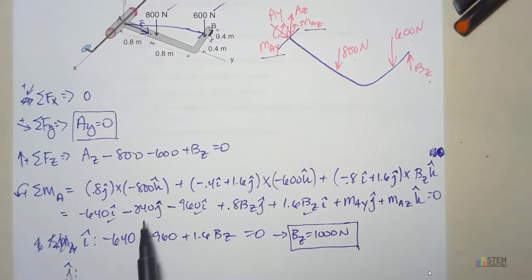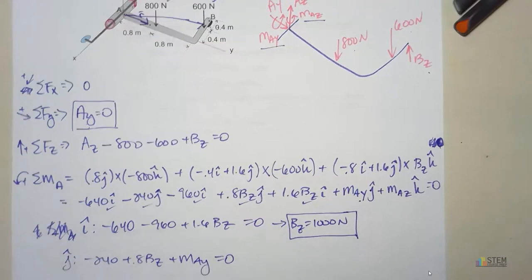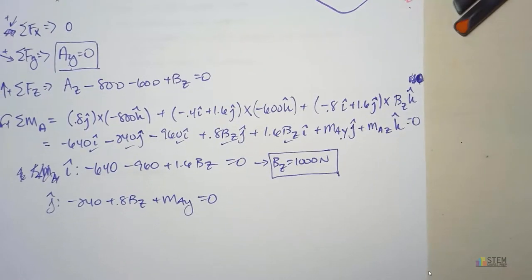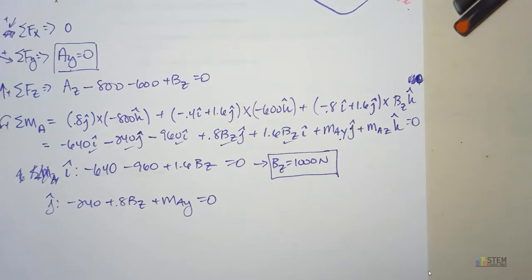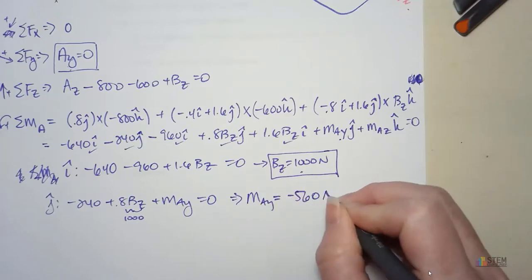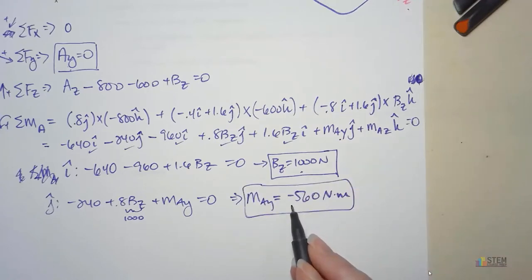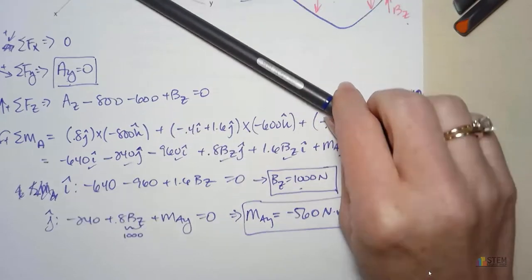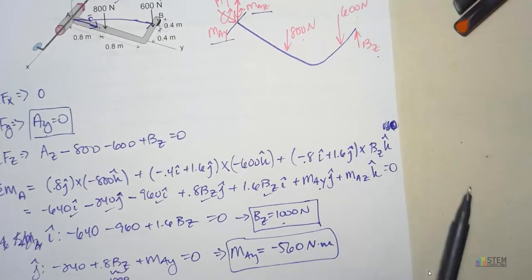Now J, let's look at the J terms. We've got negative 240 plus 0.8 BZ and MAY. That's got to equal 0. We can't solve yet for that because we have too many unknowns. Actually we can solve for that. Forgot we already have this BZ, so let's plug this BZ in here. Then we can solve for MAY. Amazing how quickly I forget these things. So MAY is going to be negative 560 Newton meters. The negative just means we assumed the wrong direction. I assumed it was positive, so counterclockwise. Really that moment is clockwise about the y-axis.